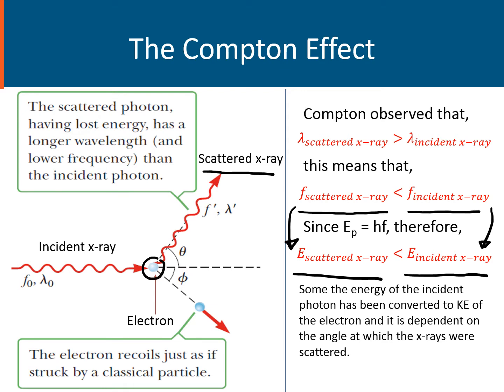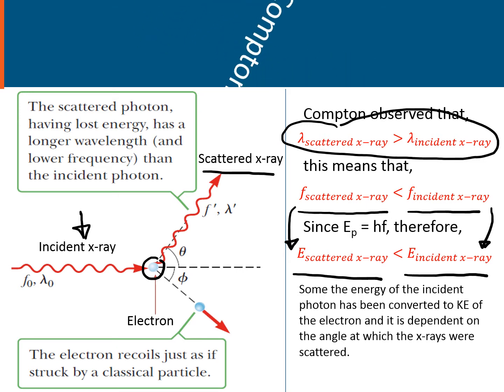This electron recoils just as if it was struck by a classical particle — just imagine a billiard ball being hit by another billiard ball. That's what happens when the electron is hit by the incident x-ray photon. The loss of energy due to the change in wavelength is the context of the Compton Effect.